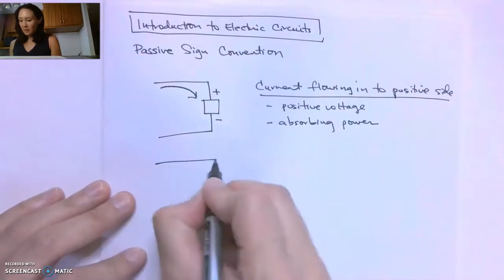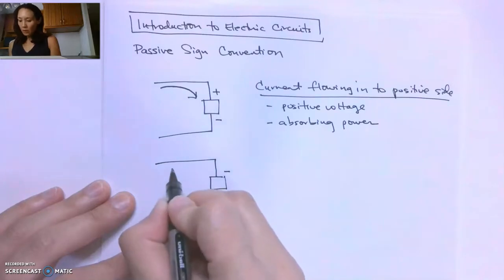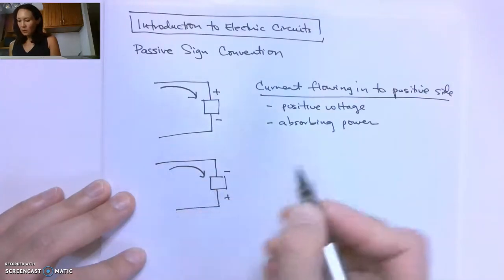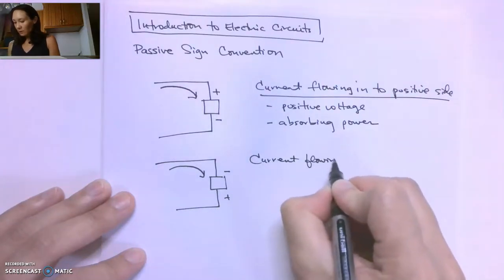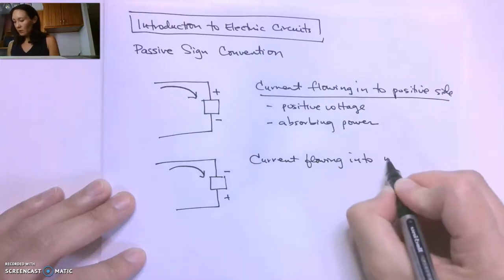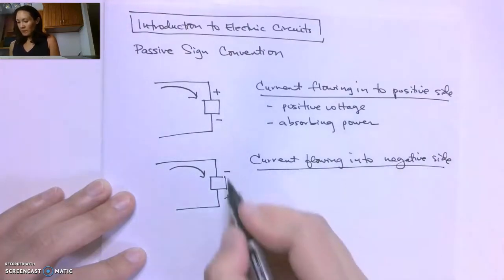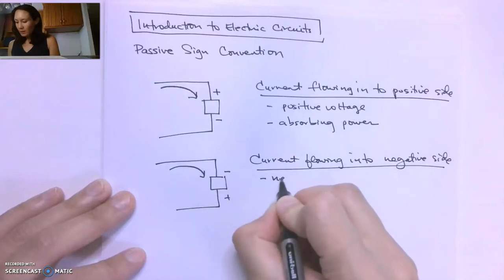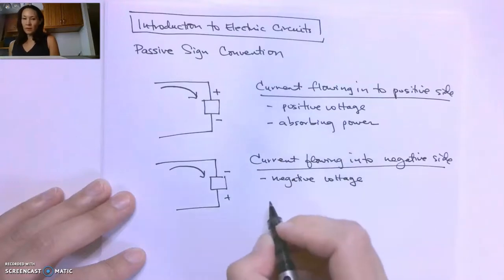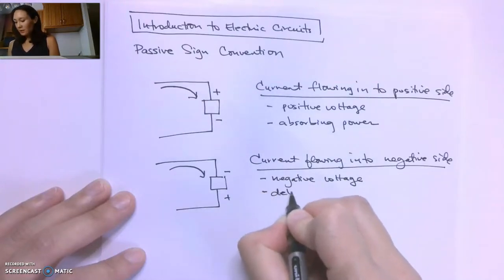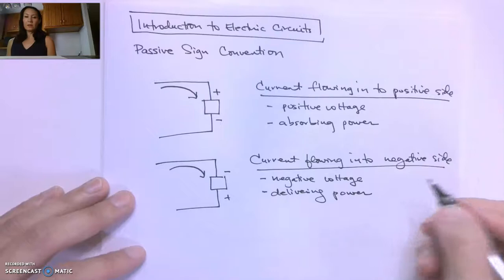The other case is if our circuit element is in this orientation, where the current is flowing into the negative side. If it has a voltage drop in this orientation, we would call this a negative voltage, and we say that it is delivering or supplying power to the circuit.